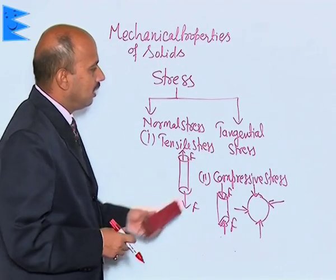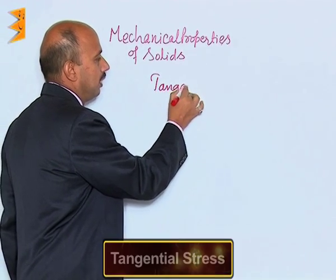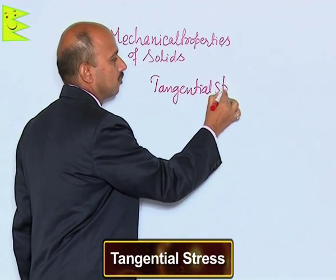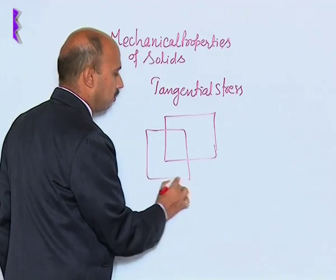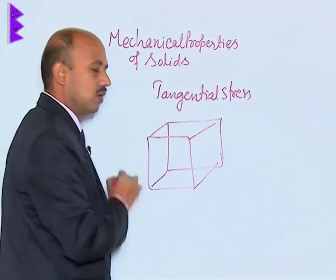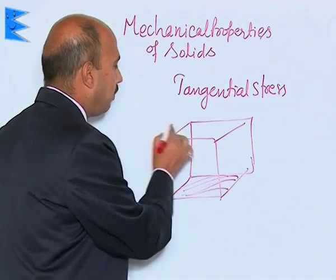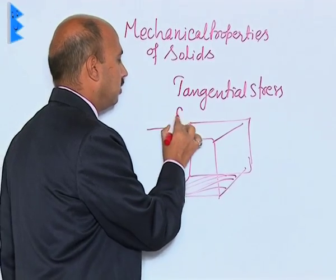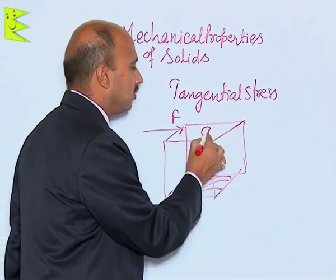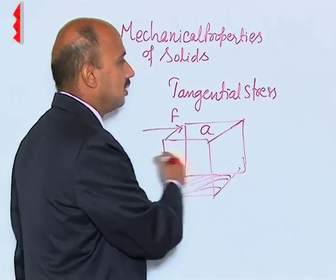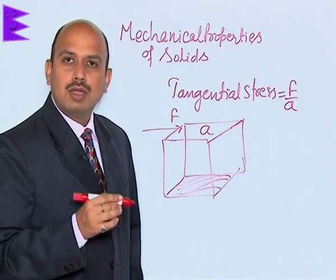Now let us discuss tangential stress in detail. Suppose you have a cube whose bottom portion is fixed. You apply a tangential force on the upper surface, where the area of that face is A. Then tangential stress is equal to F divided by A — that is tangential force upon area. Its unit is also Newton per meter square.